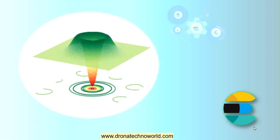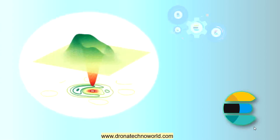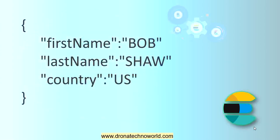Now I assume you have some idea about Elasticsearch. Would you like to know how it works? In Elasticsearch, information or data is stored as a document. Here is a sample example. On screen we can see labels like first name, last name, and country with corresponding values like Bob, Shaw, and US respectively. This is nothing but a JSON object which holds fields and values. We send this JSON object to the Elasticsearch engine and it will be stored as a document.